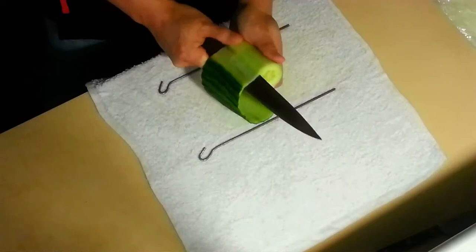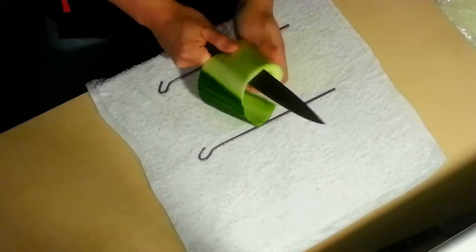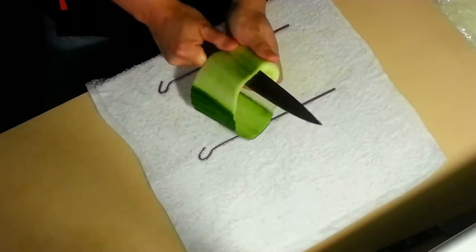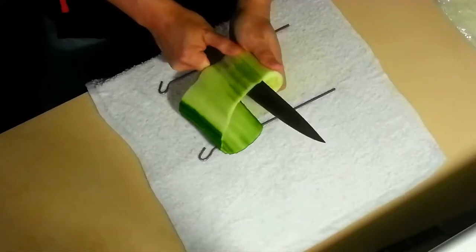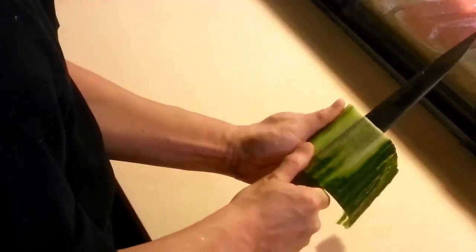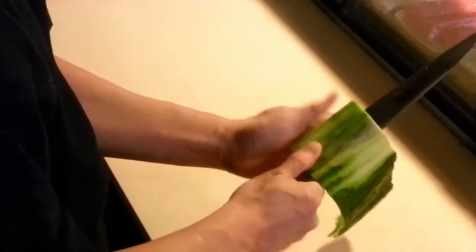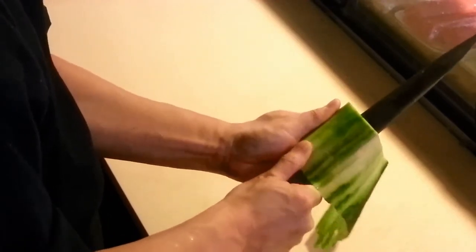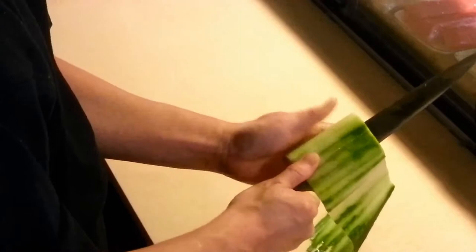People usually use the turn and cut method when peeling a cucumber. However, it takes too much time and it is a hard skill to master. I'm going to be showing you what I call the metal bridge method. It is at least five times faster and easier to learn than the original method.